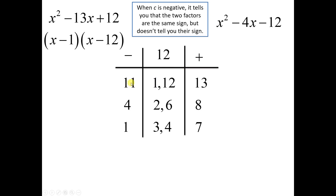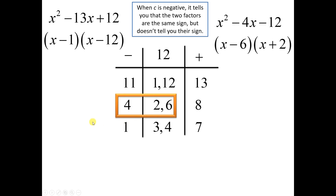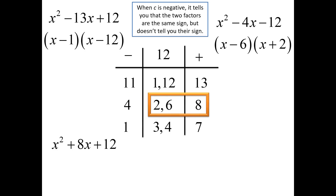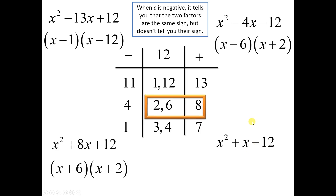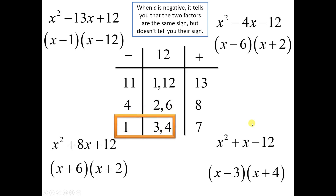Next: x squared minus 4x minus 12. This is subtraction, so I'm looking for two numbers whose difference is 4 and whose product is 12. The bigger number is negative because negative 6 plus 2 gives negative 4. If it were positive 4, the 6 would be positive and the 2 negative. Another one: x squared plus 8x plus 12 — two numbers that multiply to 12 and add to 8, that's 6 and 2, both positive. Last: x squared plus x minus 12 — two numbers multiply to 12 and differ by 1, with different signs. That's 4 and 3, so the answer is x plus 4 times x minus 3.